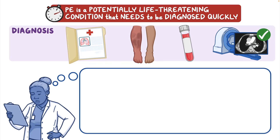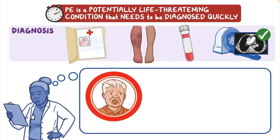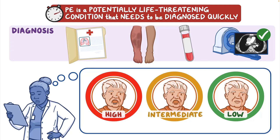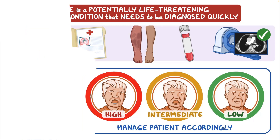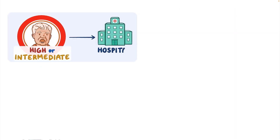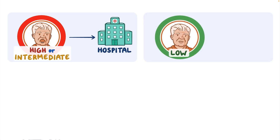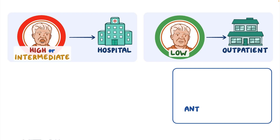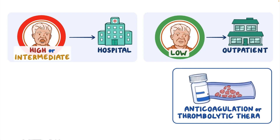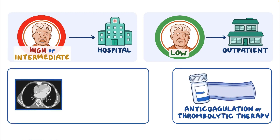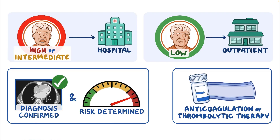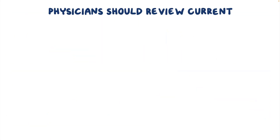If a patient is diagnosed with PE, the physician should determine whether the patient has high, intermediate, or low risk for poor outcomes and manage the patient accordingly. Patients with a high or intermediate risk PE should be hospitalized, whereas patients with a low risk PE can be safely managed as outpatients. Anticoagulation or thrombolytic therapy, as appropriate, should be promptly initiated in the emergency department once the diagnosis and risk classification have been determined. Physicians should review current guidelines and literature to anticipate and be prepared for these cases.